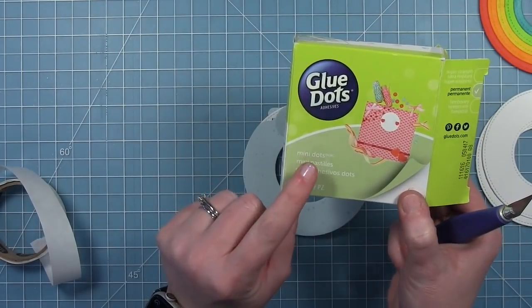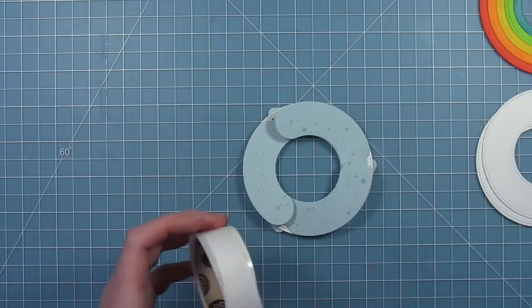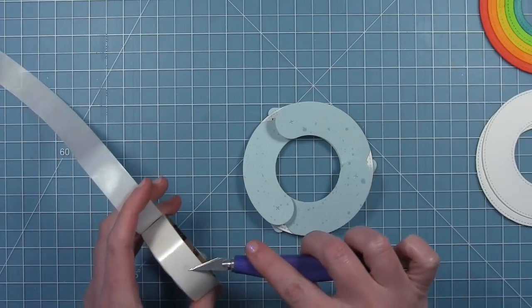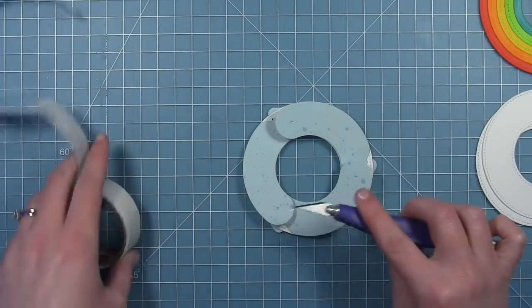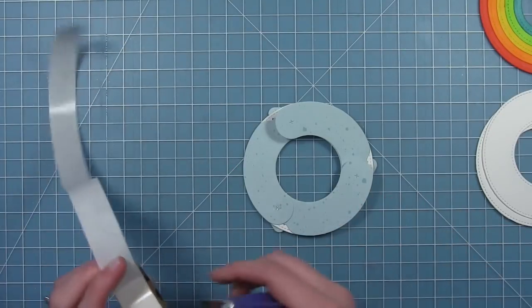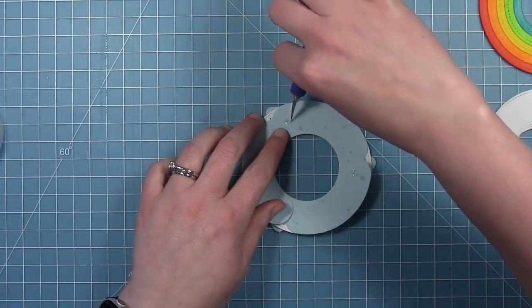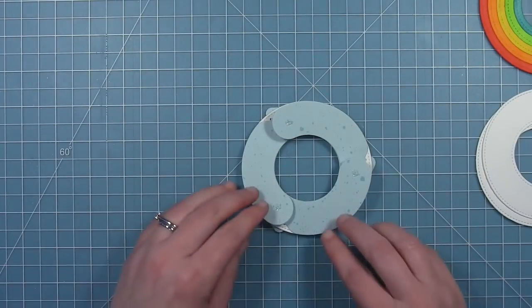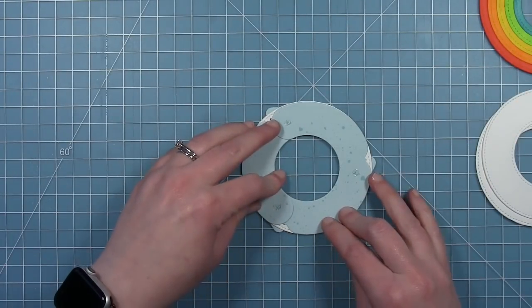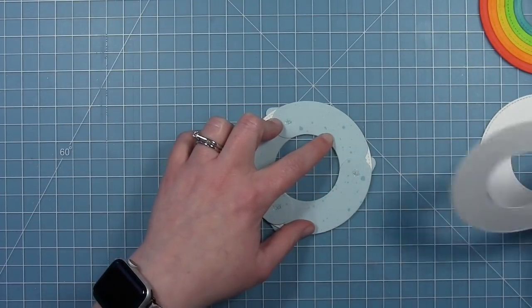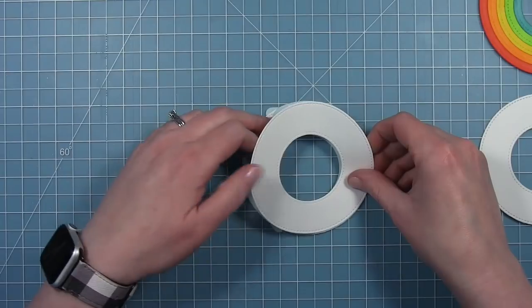Now I'm going to use the mini glue dots. This is the mini size. This is 3/16ths. And I'm just going to put a glue dot on each one of the X's that the die created on the end of these sausage pieces. So three dots, one on each piece. I'm just using my craft knife to put them in place. And once all three of those are on there then I can layer one of the other rings, the solid rings that I cut, right on top, and attach it right where those glue dots are.